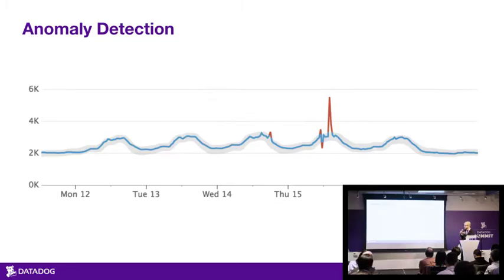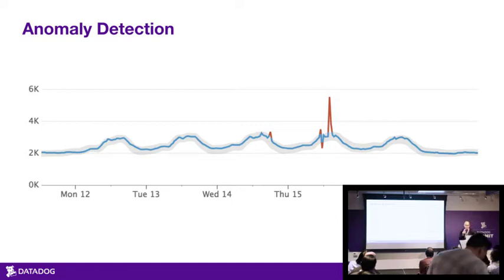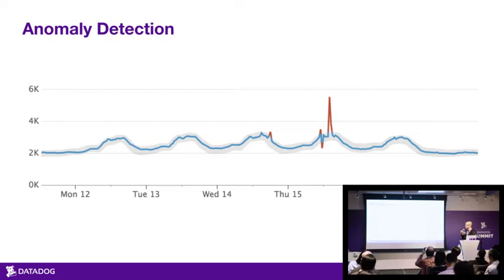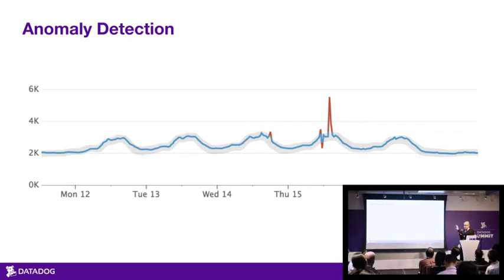To alert on seasonal metrics, trending metrics, and the combination of both, we have anomaly detection. Anomaly detection looks at the past behavior of your metric and alerts when it deviates from what we think is normal behavior — and it does this in real time. We predict the range of values we think is normal, represented by a gray band. Any time the metric leaves that gray band, we color it red and call that an anomaly.